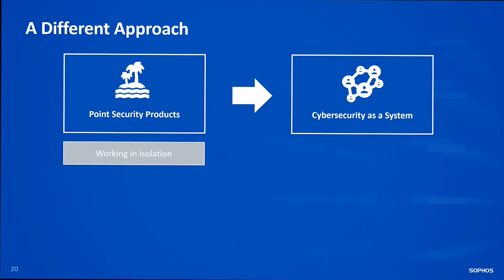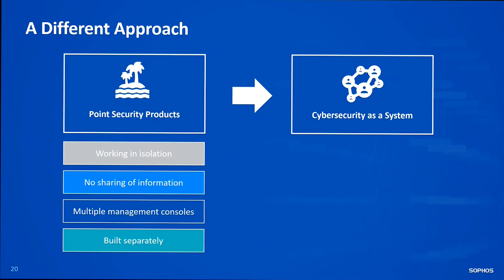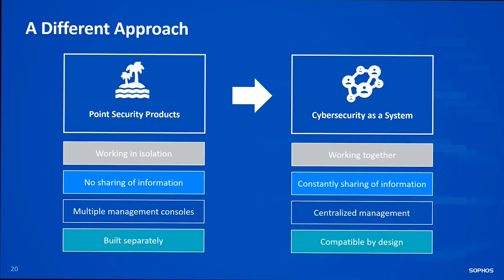The traditional approach is to find point security products — when every new environment pops up, you find a leader in that category for a new vendor. But the issues with point security products are they often work in isolation, don't share information unless you do the setup through API or integration, require multiple management consoles, and are all built separately by different vendors. With the adaptive cybersecurity ecosystem, products work together, constantly sharing information, management is centralized, and they're compatible by design — able to play off each other's security features, communicate, take action, and automate.